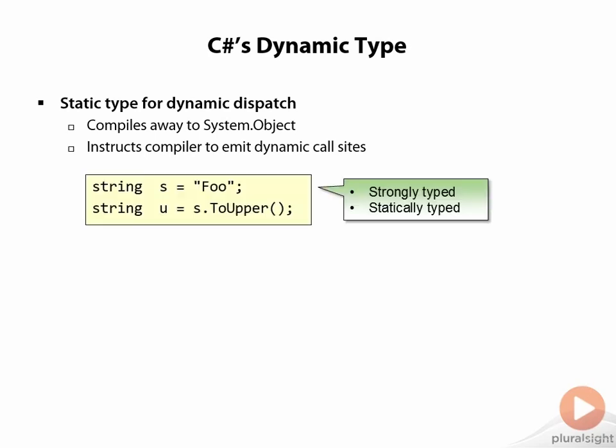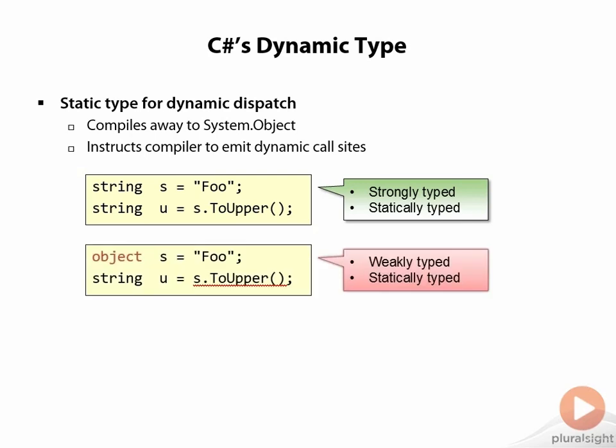Let's take a look at an example of the same code fragment in three different typing disciplines. The first one is a code fragment where I have a string called S, I assign it "foo", and I can call S.ToUpper(). I even get IntelliSense because S is strongly typed and statically typed — the compiler statically knows what the type of S is. However, I can still statically type S to be system.object. System.object is weakly typed because it is the least amount of type information you can imagine — it's the mother of all types. As a result, we don't get IntelliSense that shows ToUpper; we'll see Equals, GetHashCode, and ToString, but not ToUpper.